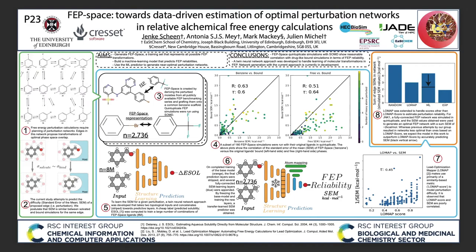My name is Jenke and I'm a PhD student at the University of Edinburgh in the group of Julian Michel. This poster displays our ongoing work on optimal network generation for free energy perturbation, or FEP. FEP space was constructed to serve as a model training set to represent all realistically possible molecular transformations in FEP. The reliability in standard error of the mean (SEM) from cross-screen duplicate FEP simulations correlates well to its original ligands in the bound phase. We aim to open source this dataset for the community. Additionally, we've constructed a twin neural network approach with dual inputs—one for each ligand member of a given perturbation. Through a Siamese learning approach, we're able to predict FEP reliability and feed this into perturbation network generator algorithms. Although this is very much ongoing work, we expect to outperform state-of-the-art network generation methods using our FEP reliability predictors. Please come see me at poster 23.